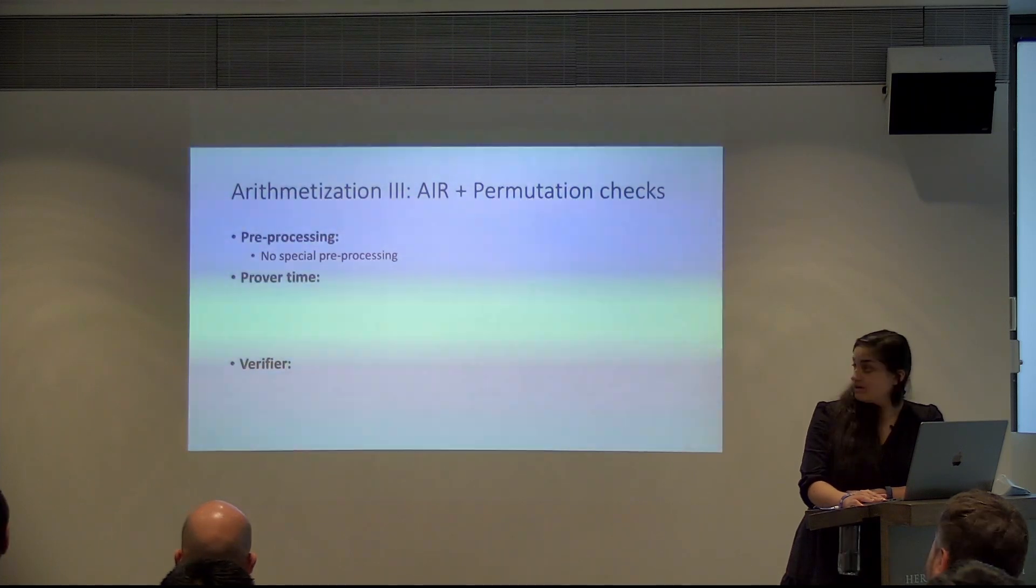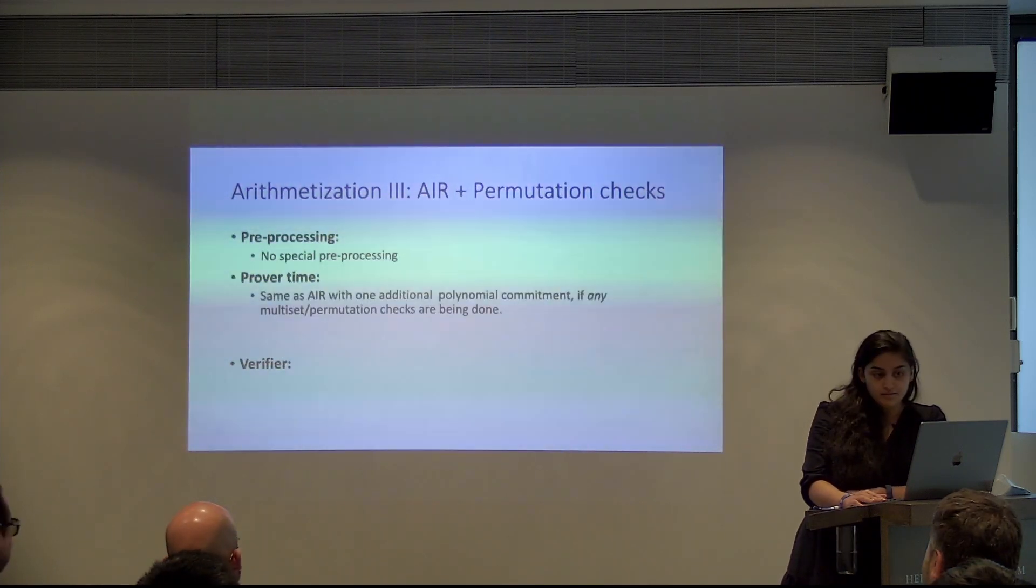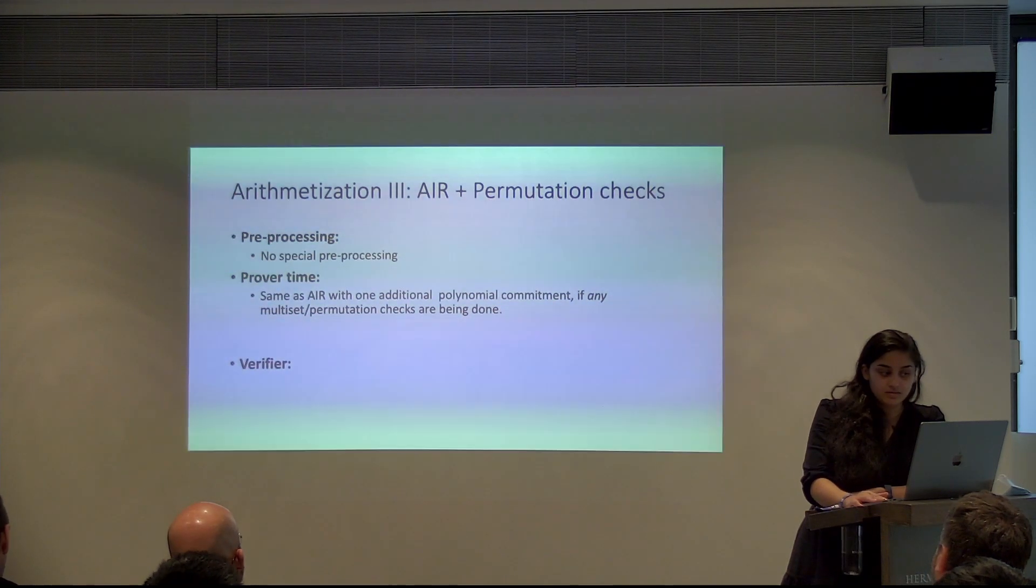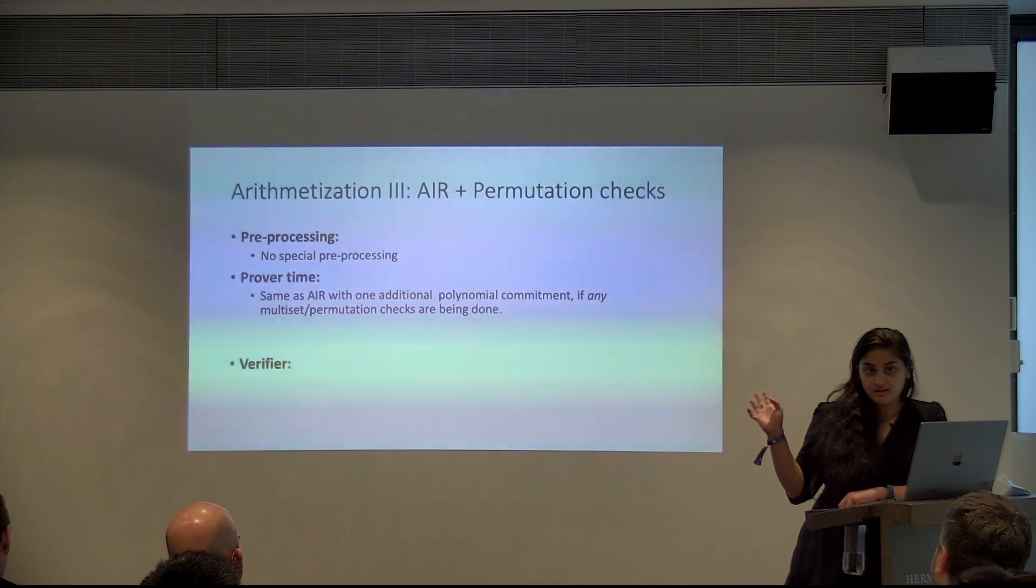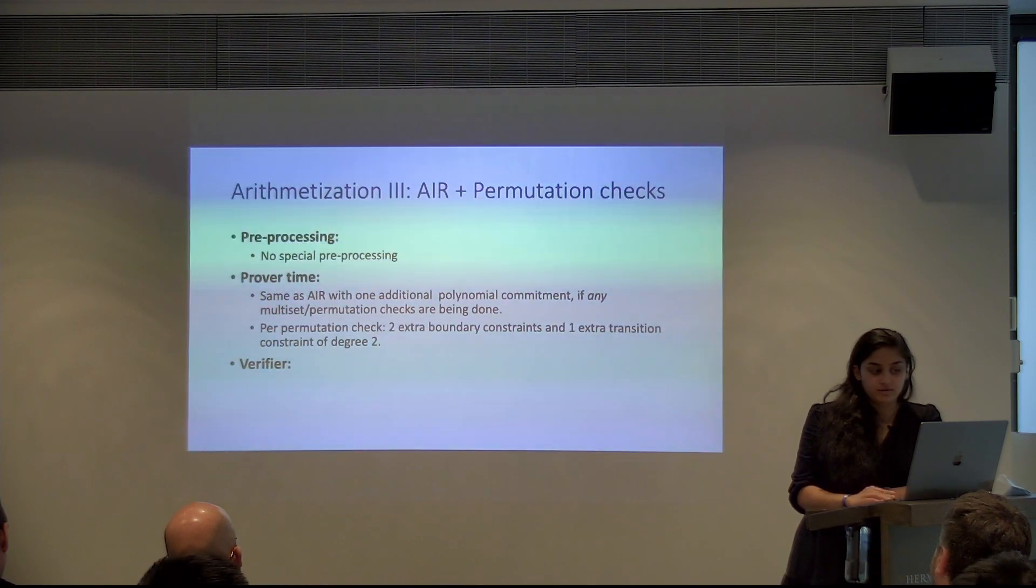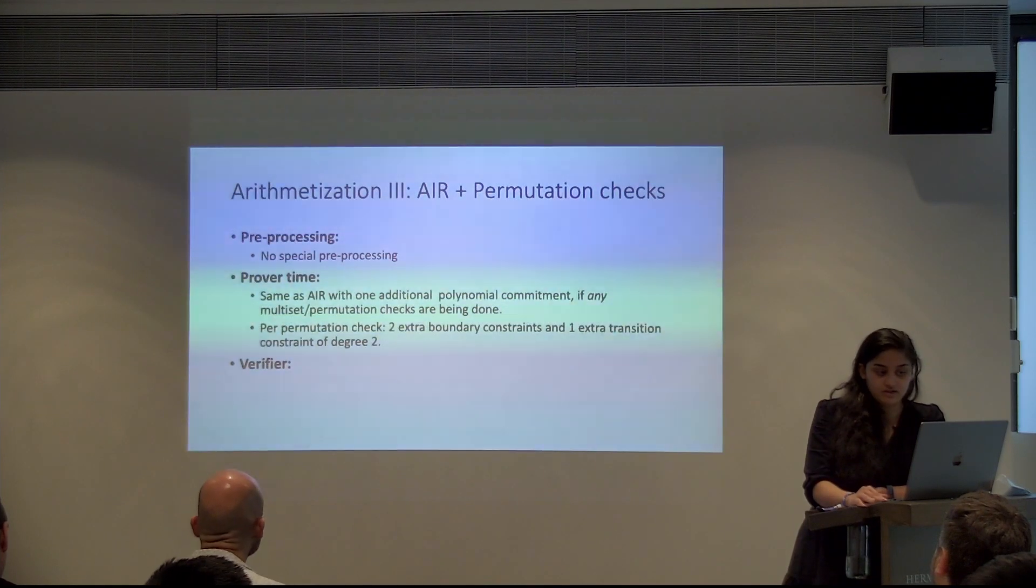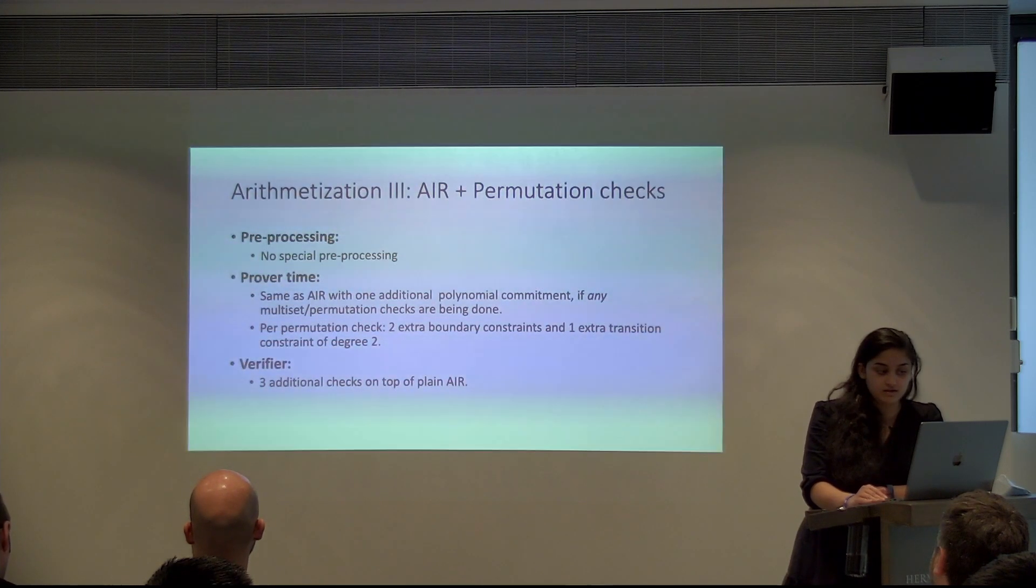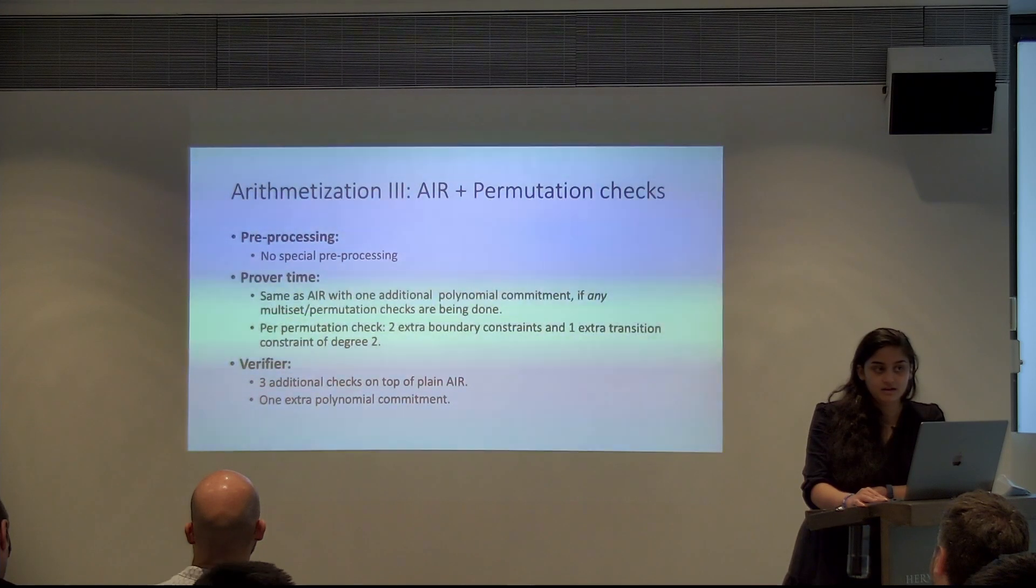Yeah, I guess the second error didn't get the house. So how do you describe this program? The same, first you start with an error instance like normal, and then you tell which columns you want to show permutations or multi set equal of each other. And you say where to look for the proofs for those in the second error. And basically that now you have an error instance that contains all the values from both the errors. So you also prove that. Again, very similar to the previous version, except you do that commitment and gamma thing. And these are the extra constraints you end up with. Again, rushing through this because I want to get to the cost of this. So again, no special pre-processing, same as air with one additional polynomial commitment. If any multi sets are done, you need one additional poly commit and you need a couple, two boundary constraints and one extra transition constraint of degree two. Pretty cheap relay is three additional polychecks for the verifier on top of plain air, one extra poly commit.